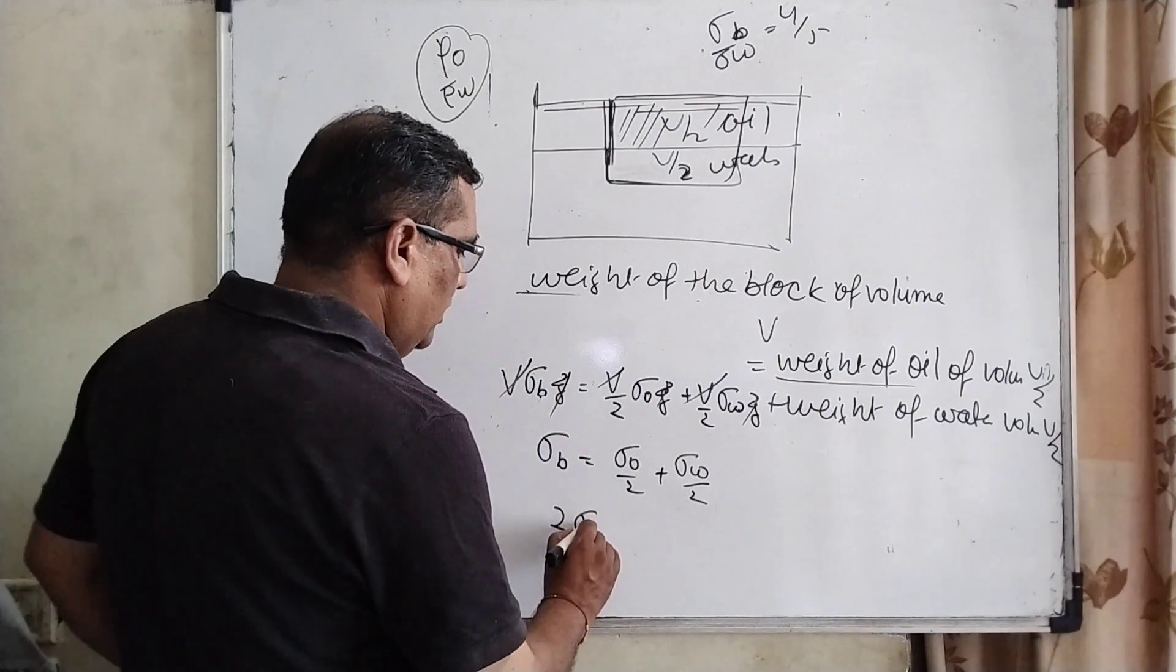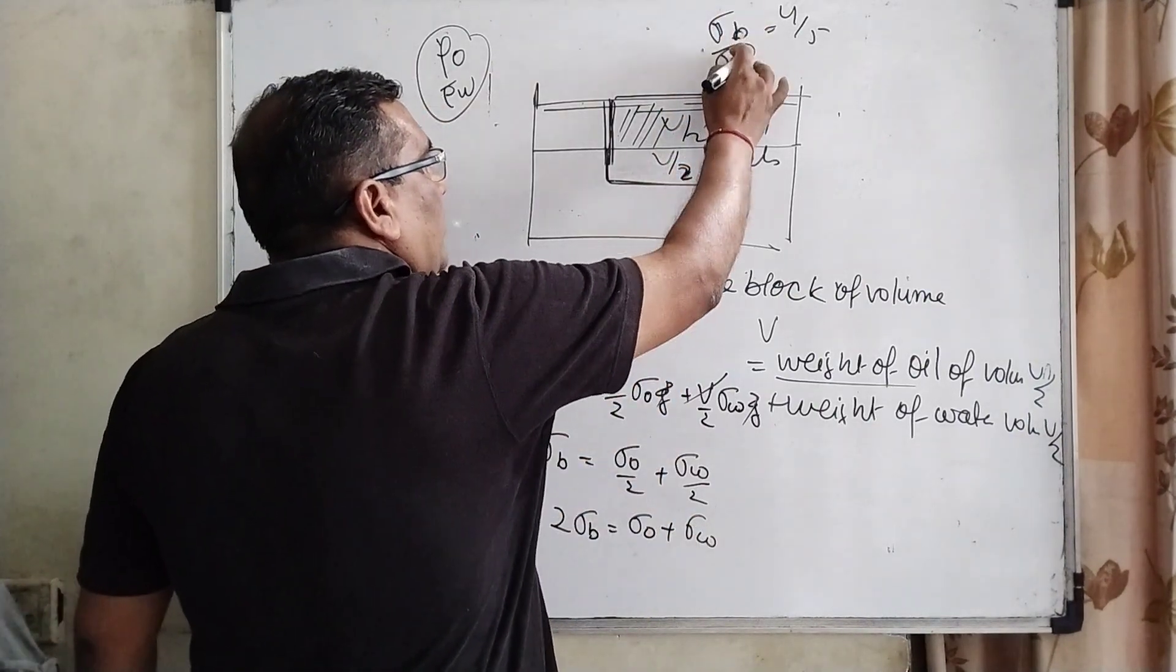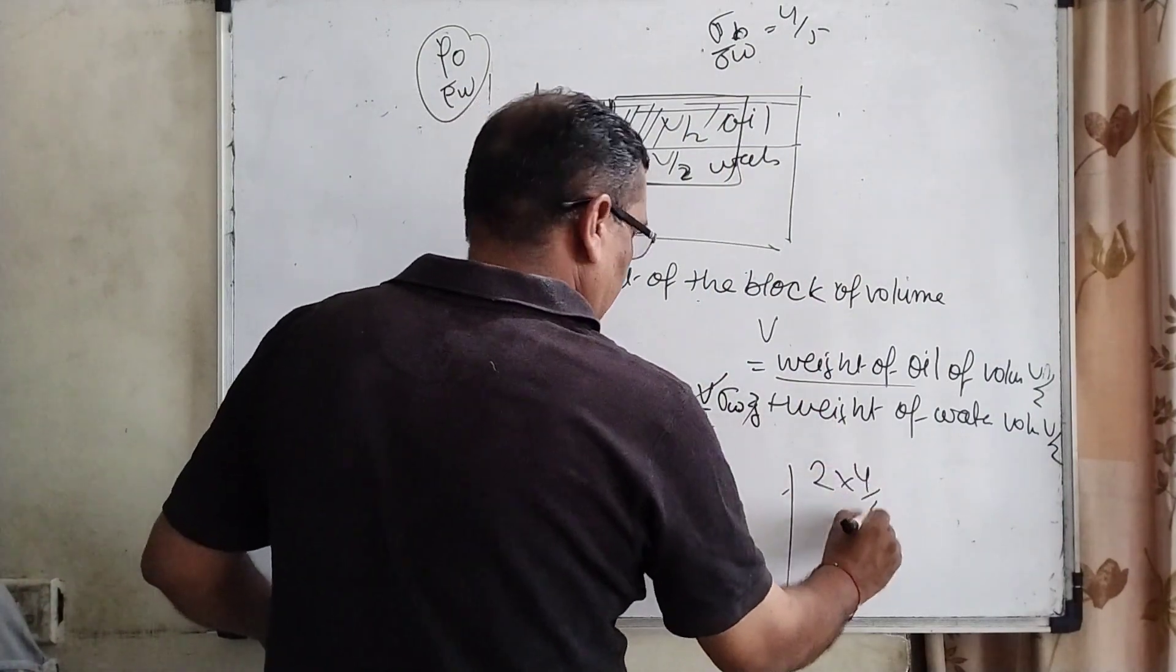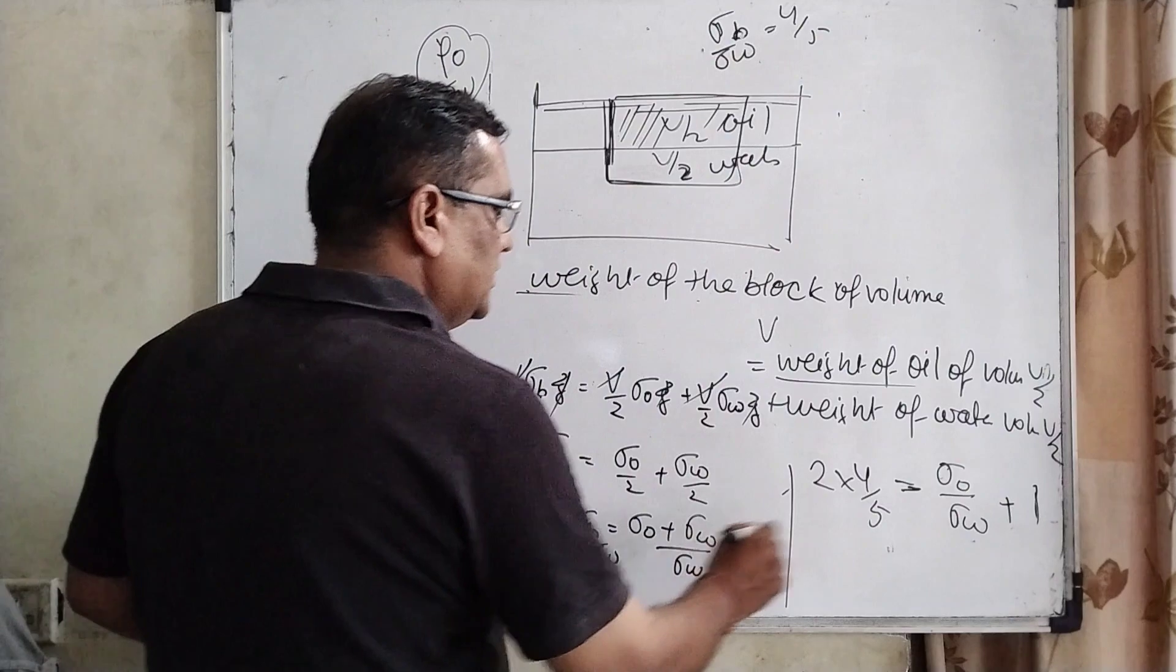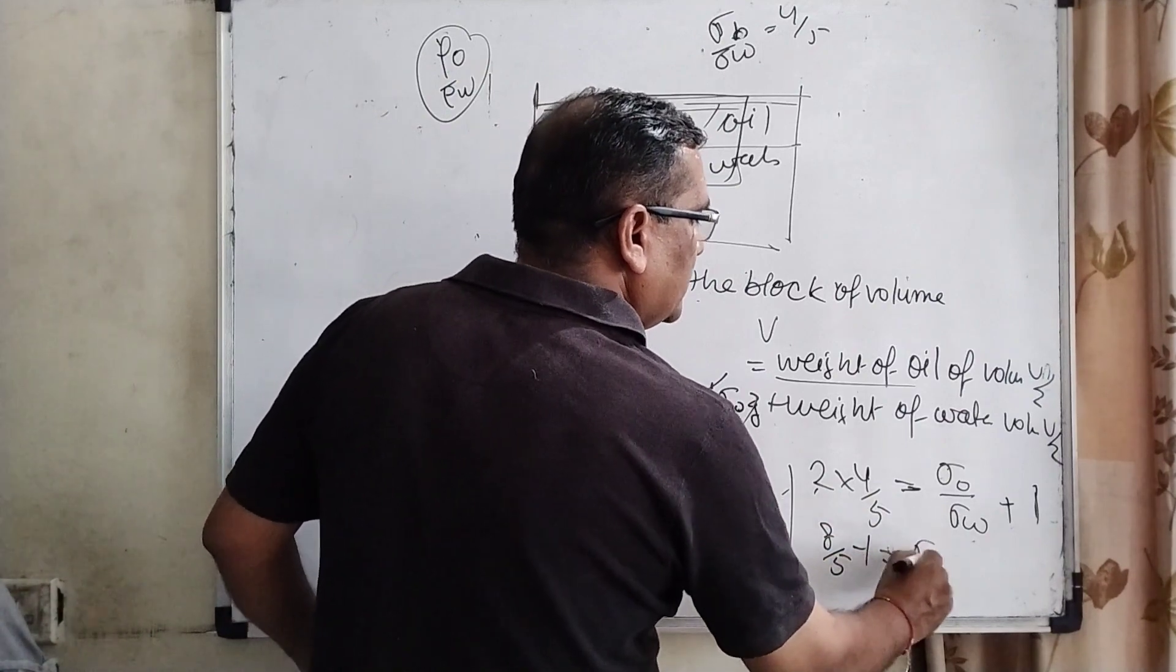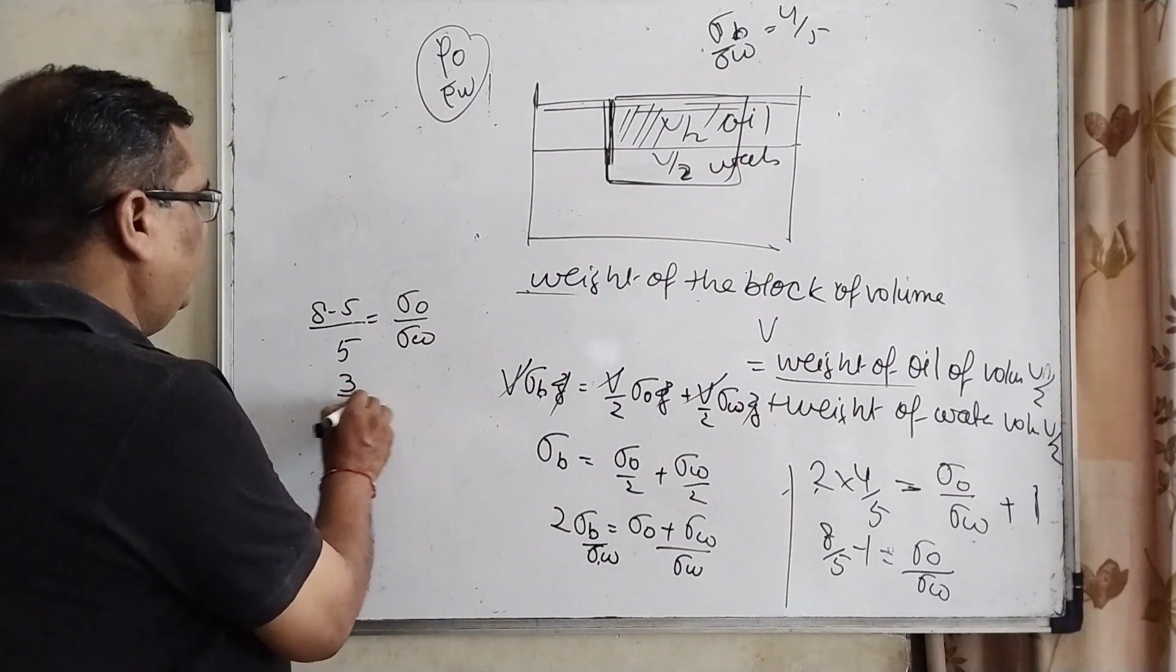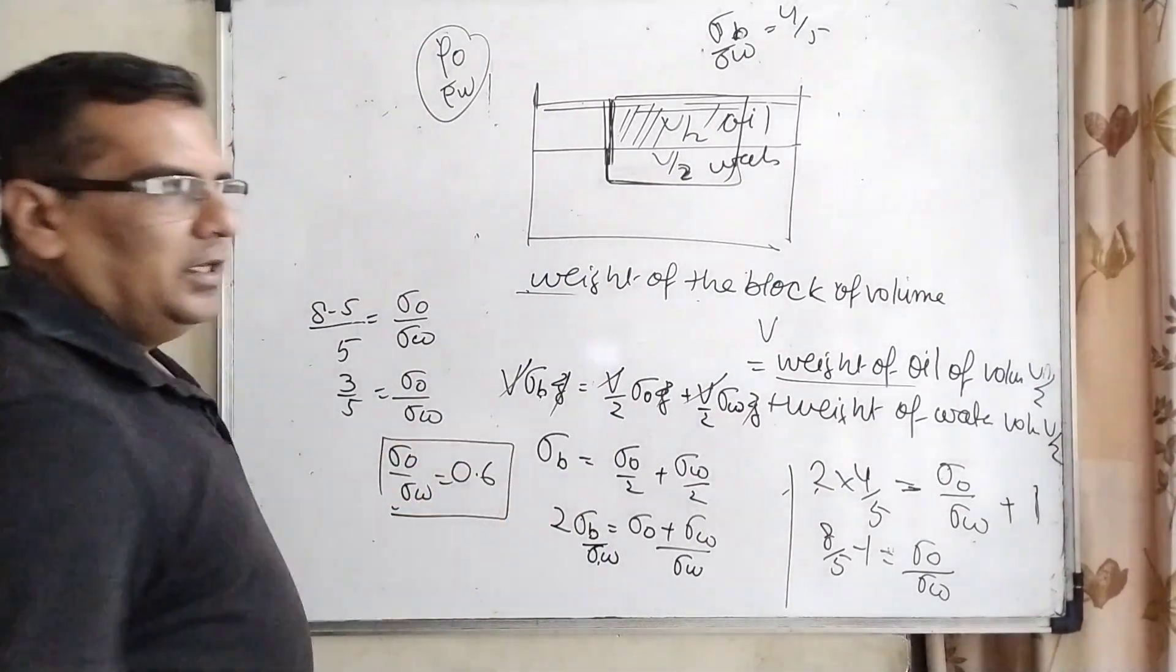Now multiply by 2, sigma B equal to sigma O plus sigma W. Here sigma B upon sigma W equal to 4 by 5. So therefore, dividing both sides by sigma W, then we get 2 into sigma B upon sigma W is equal to 4 by 5. Then it can be written as sigma O upon sigma W plus sigma W. Sigma W cancel out means 1. Then 4 to the 8 by 5 minus 1 equal to sigma O upon sigma W. Taking the LCM is 5, 8 minus 5 equal to sigma O upon sigma W. Then 3 by 5 equal to sigma O upon sigma W, which equals 0.6. So it is the correct answer.